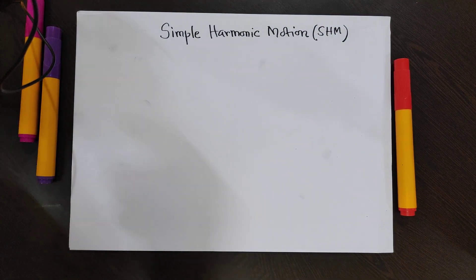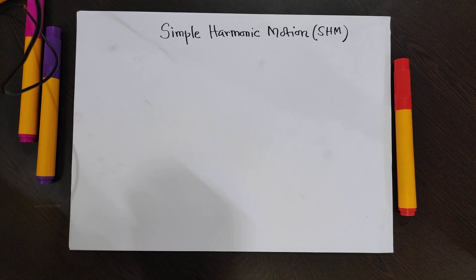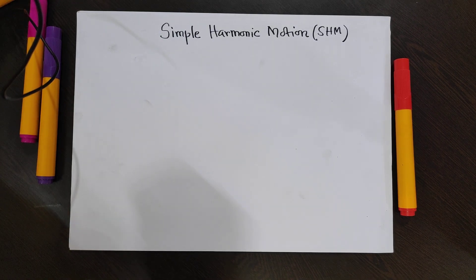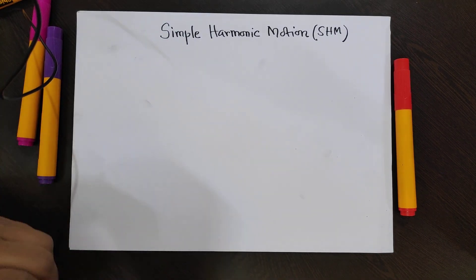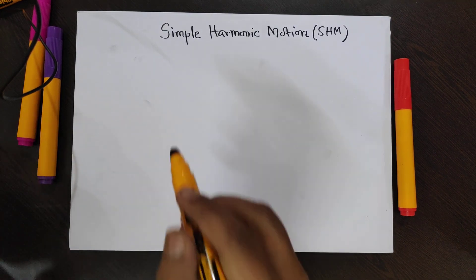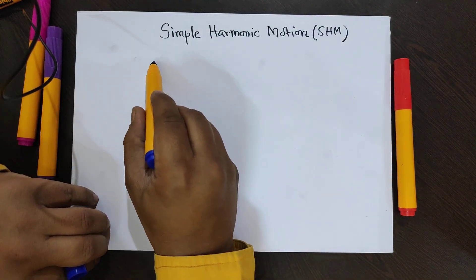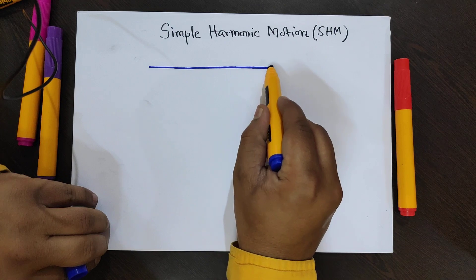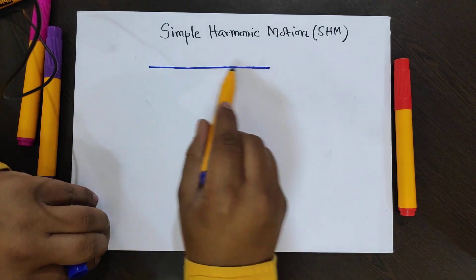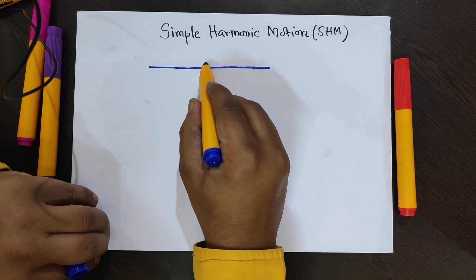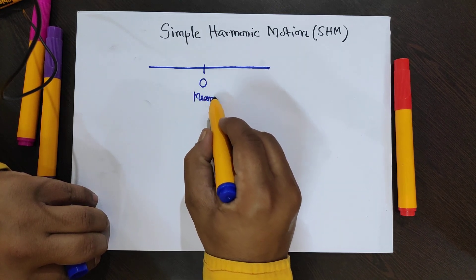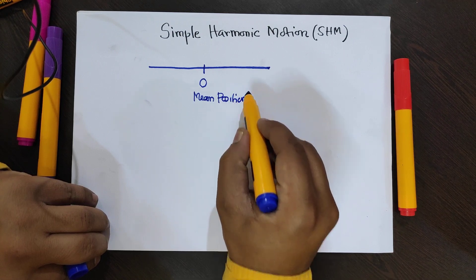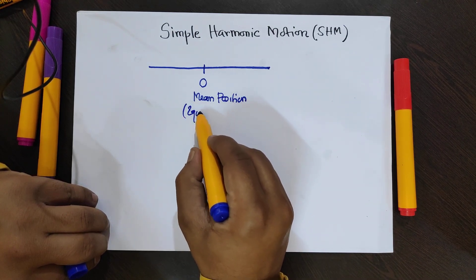Basically, simple harmonic motion is an oscillatory motion where the restoring force on a particle is proportional to the displacement from the mean position. Say suppose this is a straight line and a particle is oscillating to and fro in this path. The midpoint is known as the mean position, or it is also known as the equilibrium position.